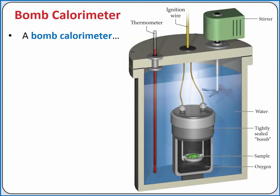We can carry out a reaction at constant volume in a bomb calorimeter. A bomb calorimeter has a tightly sealed bomb at its center, which maintains a constant volume. The bomb contains a sample which can undergo combustion and oxygen. An ignition wire is used to initiate the reaction.